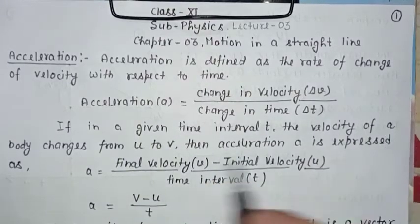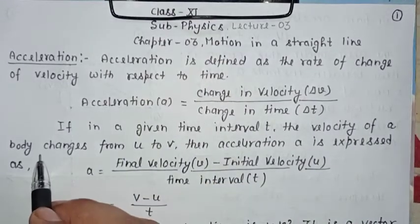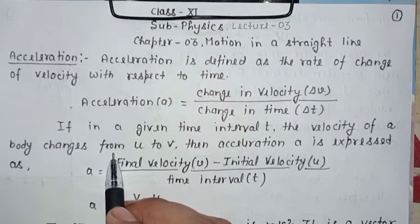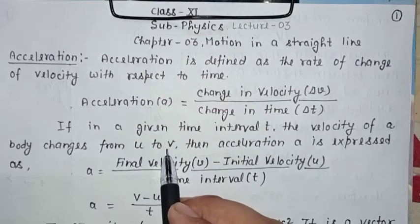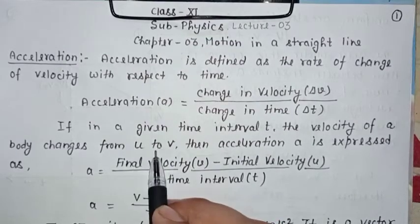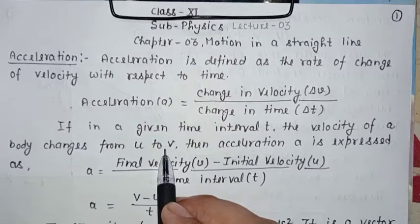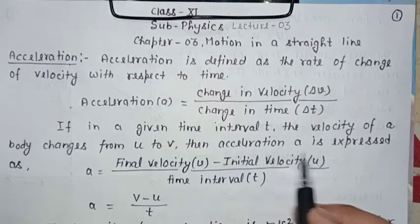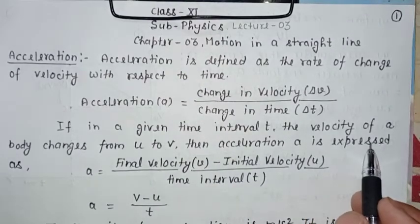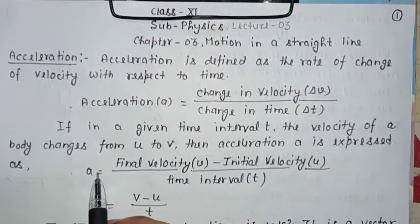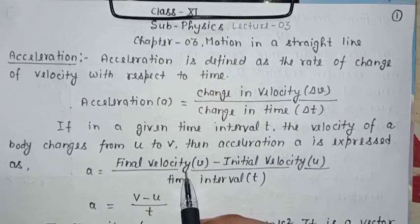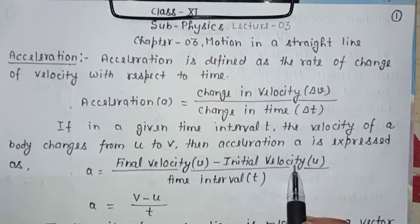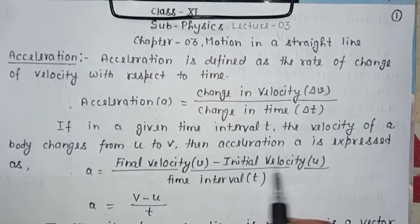the velocity of a body changes from u to v, then acceleration is expressed as: final velocity minus initial velocity u, over time interval t.